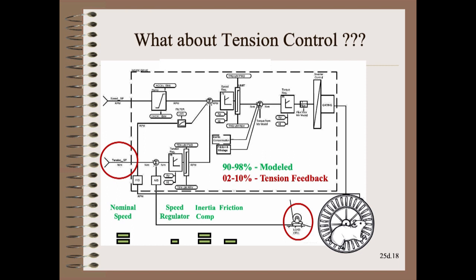Wait a minute, Dave. You've spent much of your five minutes on setting up a drive without a single mention of tension control. That's right. Preparation is the key to quality control. 90 to 98 percent of the motor's effort is modeled. When we know about the source of an upset, such as speed changes, we deal with it before the load cell tells us. However, we must acknowledge that our model of the real world will not be precisely the same as the real world itself. Thus, we need a tension setting from the operator and a load cell for feedback. However, the load cell's authority is very small — only 2 to 10 percent of the range of the motor, depending on details we won't cover here.